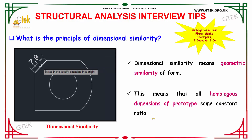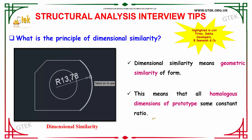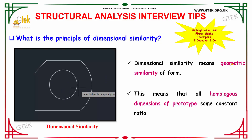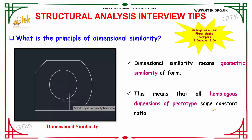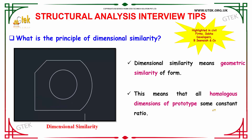The next question is: what is the principle of dimensional similarity? Dimensional similarity means geometric similarity of form. This means that all the homologous dimensions of the prototype have a constant ratio. This constant ratio is known as the principle of dimensional similarity.